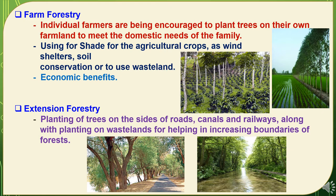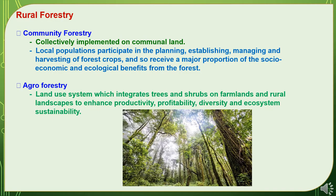In case of extension forestry, there is planting of trees on the sides of roads, canals, and railways, along with planting on wastelands, to help increase the boundaries of forests. Rural forestry is of two types: community forestry and agroforestry. In community forestry, it is collectively implemented on communal land, and local populations participate in the planning, establishing, managing, and harvesting of forest crops, receiving a major proportion of the socio-economic and ecological benefits. In agroforestry, it is a land use system which integrates trees and shrubs on farmlands and rural landscapes to enhance productivity, profitability, diversity, and ecosystem sustainability.